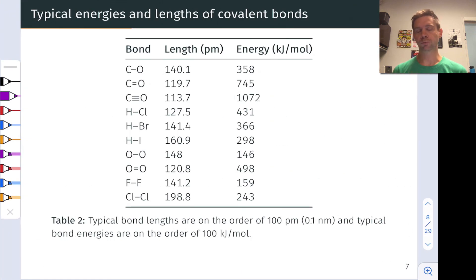The next slide just shows some more examples of bond energies, and again drives home these ideas that a typical bond length is on the order of 100 picometers, and a typical bond energy is somewhere between 100 and 1000 kilojoules per mole.